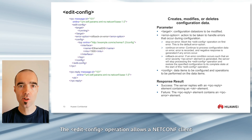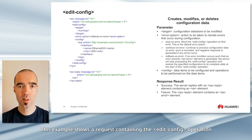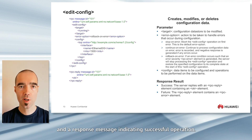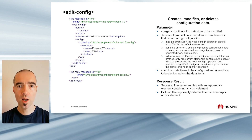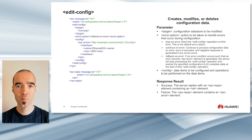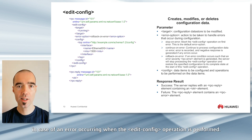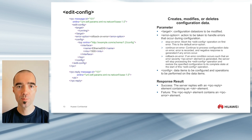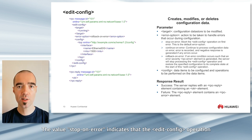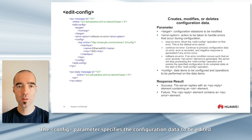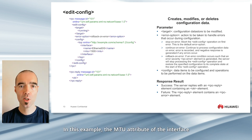The EditConfig operation allows a NETCONF client to edit configuration data of a NETCONF server. This example shows a request containing the EditConfig operation and a response message indicating successful operation. In the request, the target parameter specifies the configuration data store on which the edit operation will be performed. In this example, a running database is specified. The ErrorOption parameter specifies the action to take in case of an error occurring when the EditConfig operation is performed. The value StopOnError indicates that the EditConfig operation is aborted upon the first error. The Config parameter specifies the configuration data to be edited. In this example, the MTU attribute of the interface Ethernet0.0.0.0 is edited.